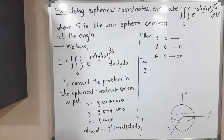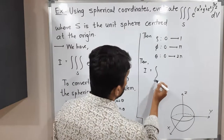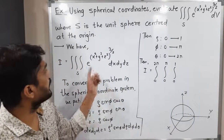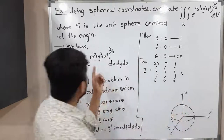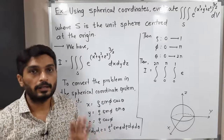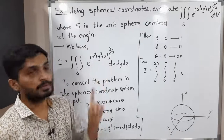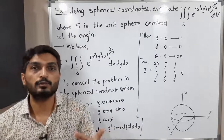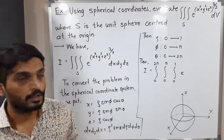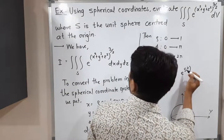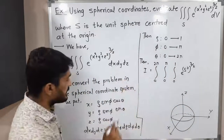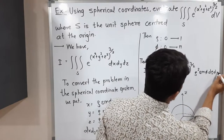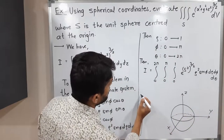Let us solve the integral now. We take outer integration with respect to θ, middle integration with respect to φ, and inner integration with respect to ρ. The function is e raised to (x² + y² + z²). Note that x² + y² + z² = ρ², so the function becomes e^(ρ²). And dx dy dz = ρ² sin φ dρ dφ dθ.